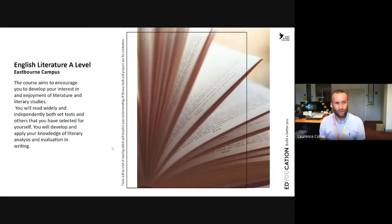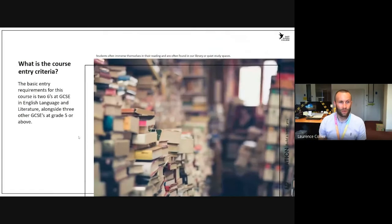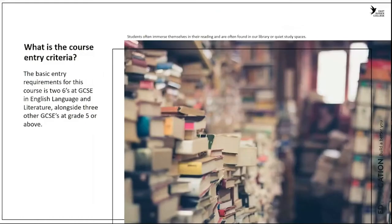On to English Literature A-level. This course aims to encourage you to develop your interest and enjoyment of literature and literary studies. You will read widely and independently, both set texts and others that you have selected for yourself, and develop and apply your knowledge of literary analysis and evaluation in writing. The course entry criteria requires two sixes at GCSE in English language and literature, alongside three other GCSEs at grades five or above.